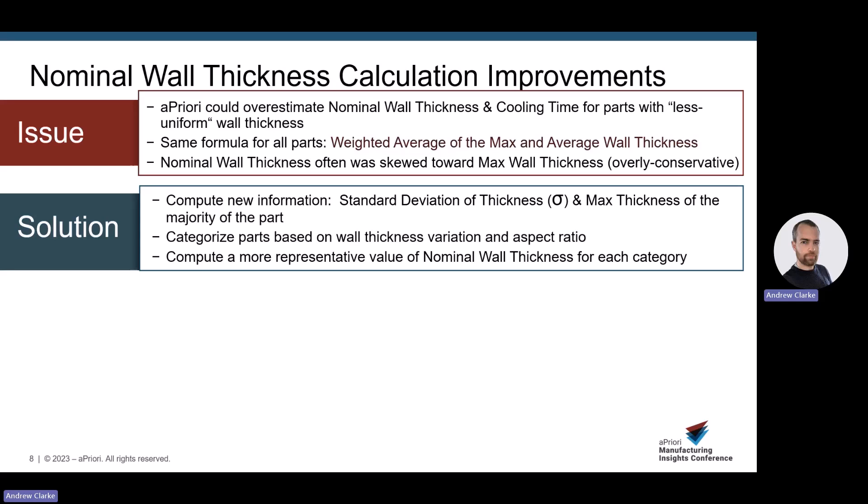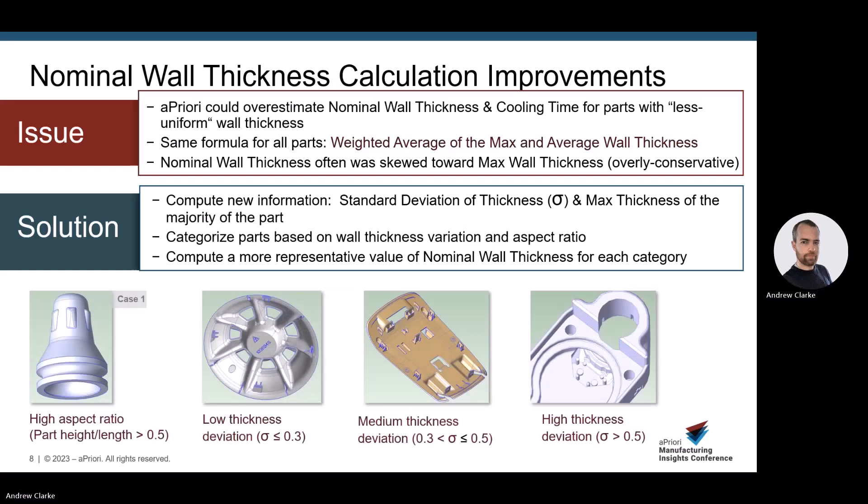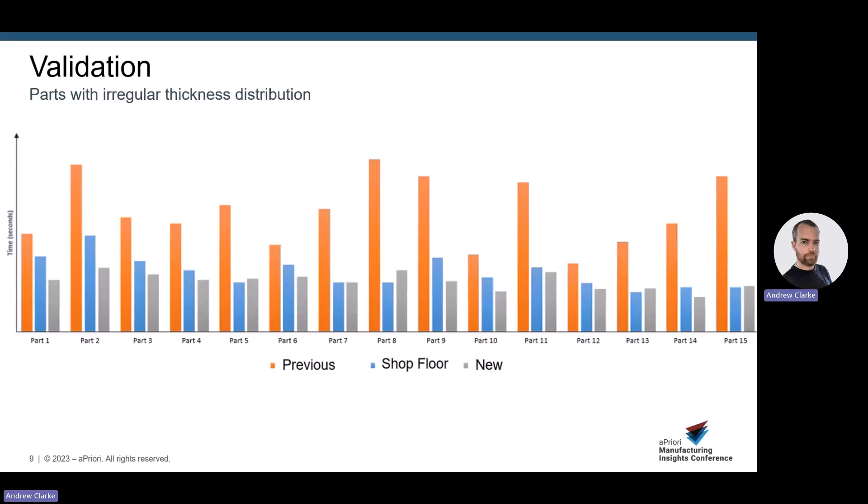To address this issue, we saw the need to classify parts with respect to the thickness distribution and aspect ratio. To enable this classification, we now extract additional wall thickness data in the form of the thickness standard deviation across the part and also the maximum thickness of 80% majority of the part. We now know what the thickness is across the lion's share of the part and by how much it varies. We then classify the parts into four camps. Different nominal wall thickness equations are then applied depending on the categorization.